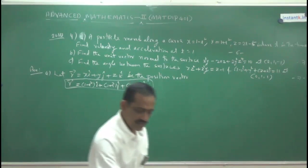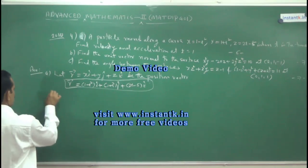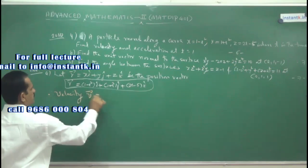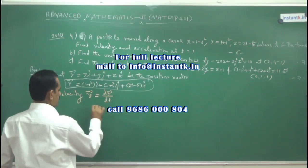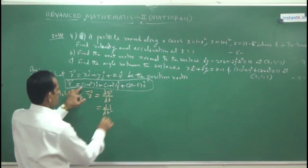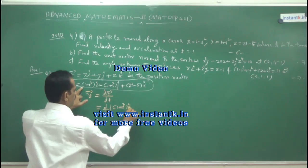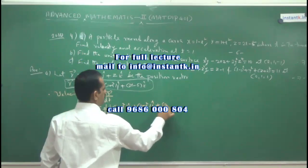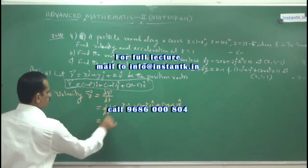From this, you shall get the derivatives. The first step: I need the derivative for velocity. Therefore, velocity is nothing but the derivative of r with respect to t, which equals d/dt of r. Vector r is (1 - t²)·î + (1 + t²)·ĵ + (2t - 5)·k̂. This is the velocity expression to differentiate.